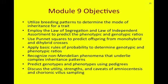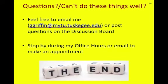Objective six is to predict genotypes and phenotypes using pedigrees, and objective seven is to discuss the utility, strengths, and caveats of amniocentesis and chorionic villus sampling. With that, Module 9 — Chapter 14 in your Campbell Biology textbook — is concluded.